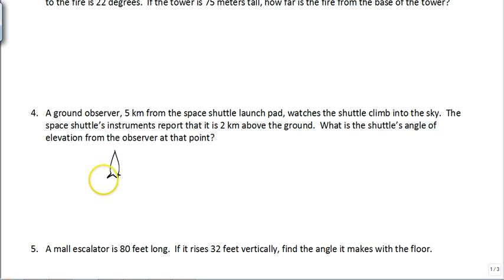And we see that the observer is five kilometers away. And so then, instruments say that it is two kilometers above the ground by now. So now you already have enough information. You know the space shuttle is two kilometers above the ground. The observer is five kilometers away. This time we're asking for what the angle of elevation is.